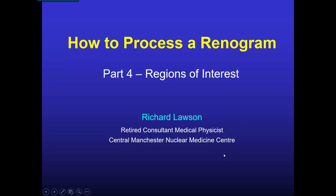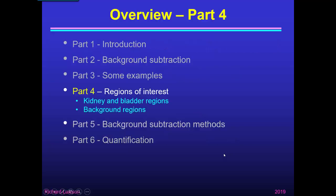This is part 4 of my talk about how to process a renogram. In part 1 I gave an introduction and explained what the renogram is. In part 2 I talked about background subtraction and how to recognise when it has been done correctly. In part 3 I showed examples of different background subtraction methods. Now in part 4 I'm going to discuss the regions of interest we need to draw — in particular the kidney, bladder, and background regions.